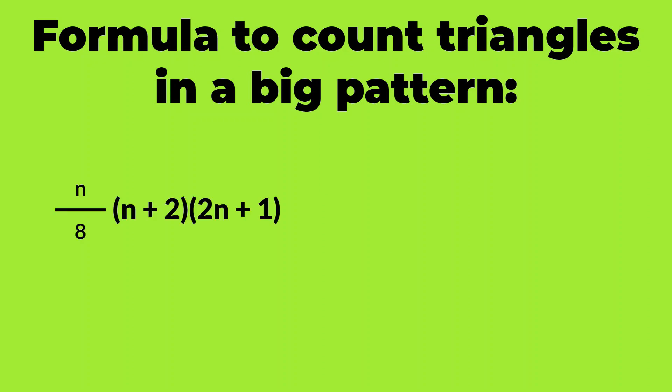n divided by 8 times n plus 2 times 2n plus 1. Here this variable n stands for the number of rows.